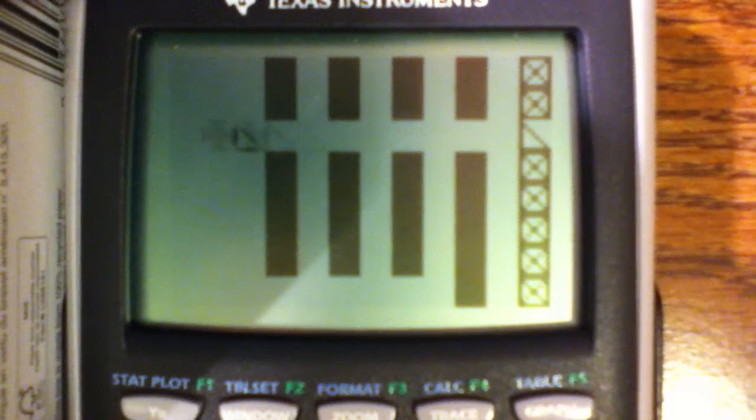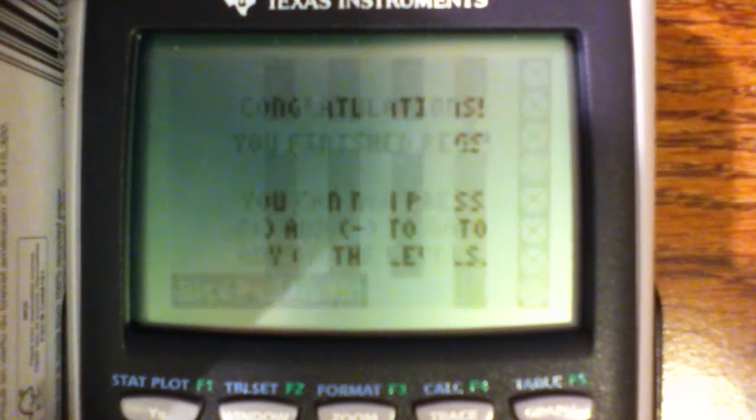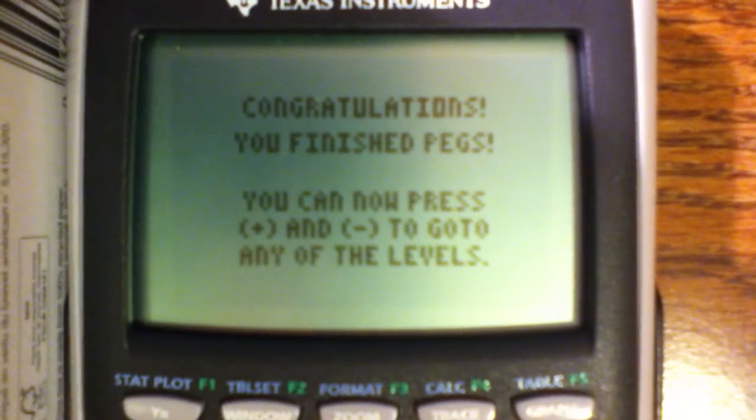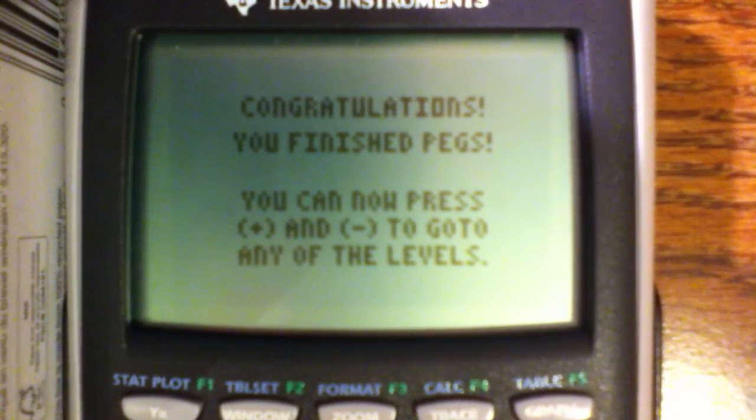We're going to push this up here, through the chute. And bam the Death Star explodes. Congratulations you finished pegs. Now press the plus and minus keys to go to any of the levels.